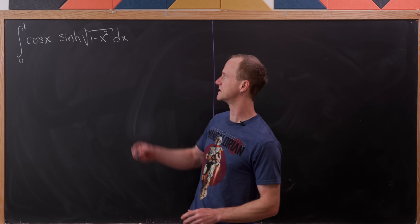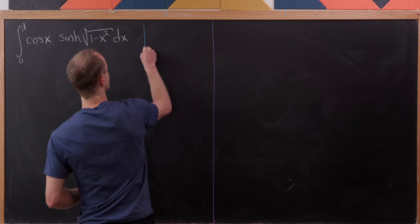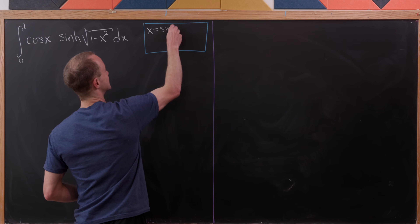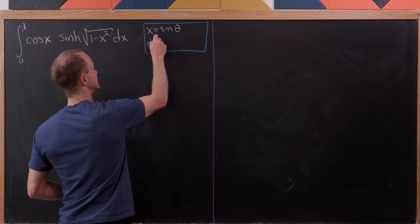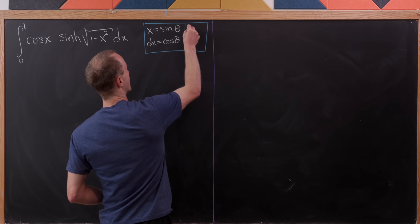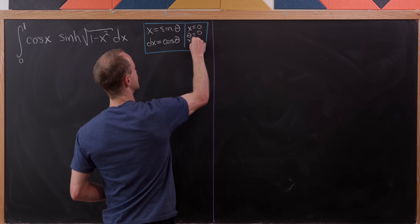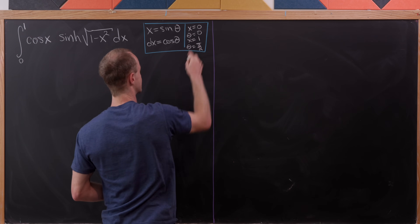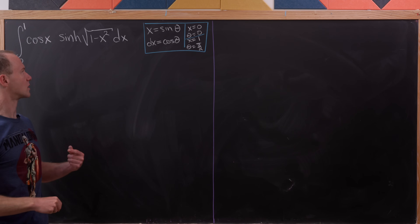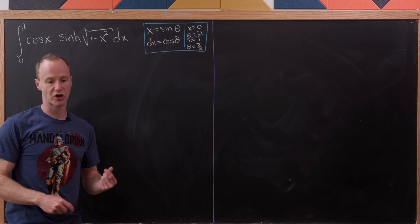The square root of 1 minus x squared motivates us to make a trigonometric substitution. We'll set x equal to sine of theta, so dx equals cosine of theta d theta. When x equals 0, theta equals 0; when x equals 1, theta equals pi over 2. Also, the square root of 1 minus x squared equals cosine of theta.